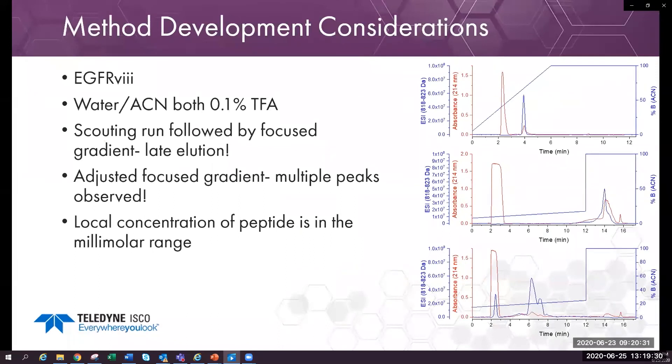These runs use synthesized epidermal growth factor receptor variant 3. The first run uses the common water acetonitrile modified with 0.1% TFA, that is trifluoroacetic acid. The calculated gradient in the center shows a late elution. The peak shape is a little odd too, although that might be due to the step gradient as well. A slight adjustment to the focused gradient causes a nice elution.